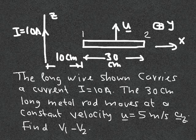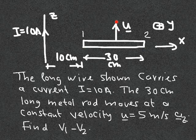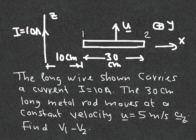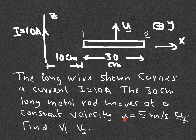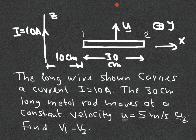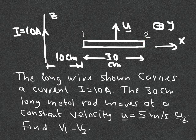This is an example on moving wires. We have a metal rod with length 30 centimeters moving in the Z direction. It's a pretty long wire so we treat it as an infinite wire carrying a current of 10 amperes. The current direction Y is going into the page. The rod moves at a constant velocity of 5 meters per second. We want to calculate V1 minus V2, where V1 is one terminal of the rod and V2 is the other.